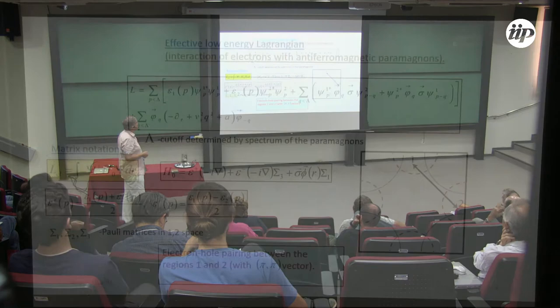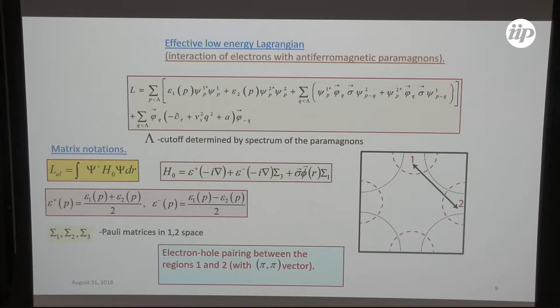If one wants to follow this idea, one can propose effective low energy Lagrangian or Hamiltonian which contains two parts of the spectrum, one and two. These two are already equivalent by translations, two effective bands, Y1 here, Y2 here, electrons and interaction with them. This interaction is just anti-ferromagnetic fluctuations and conventional spin fermion model with some spectrum.